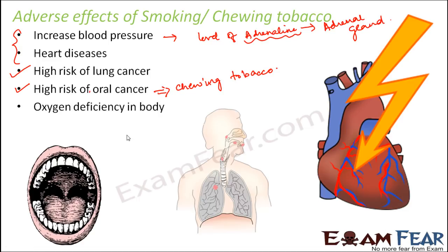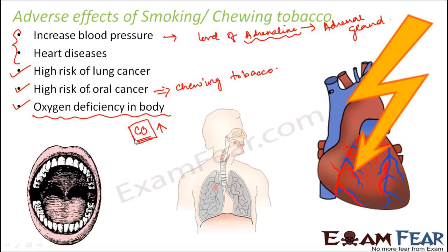Smoking also results in oxygen deficiency in the body. Due to smoking, the content of carbon monoxide increases in the body. When the level of carbon monoxide increases, the hemoglobin-bound oxygen reduces, because the way hemoglobin carries oxygen depends on the levels of oxygen and carbon dioxide. When carbon monoxide suddenly increases, the entire balance gets disturbed, and hemoglobin-bound oxygen reduces, causing deficiency of oxygen. Oxygen is required for cellular respiration in each and every cell of the body.